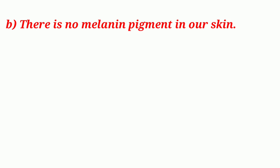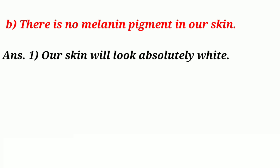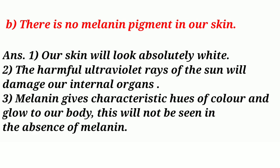Question 6b: What will happen if there is no melanin pigment in our skin? Answer: 1. The skin will look absolutely white. 2. The harmful ultraviolet rays of the sun will damage our internal organs. 3. Melanin gives characteristic hues of color and glow to our body — this will not be seen in the absence of melanin.